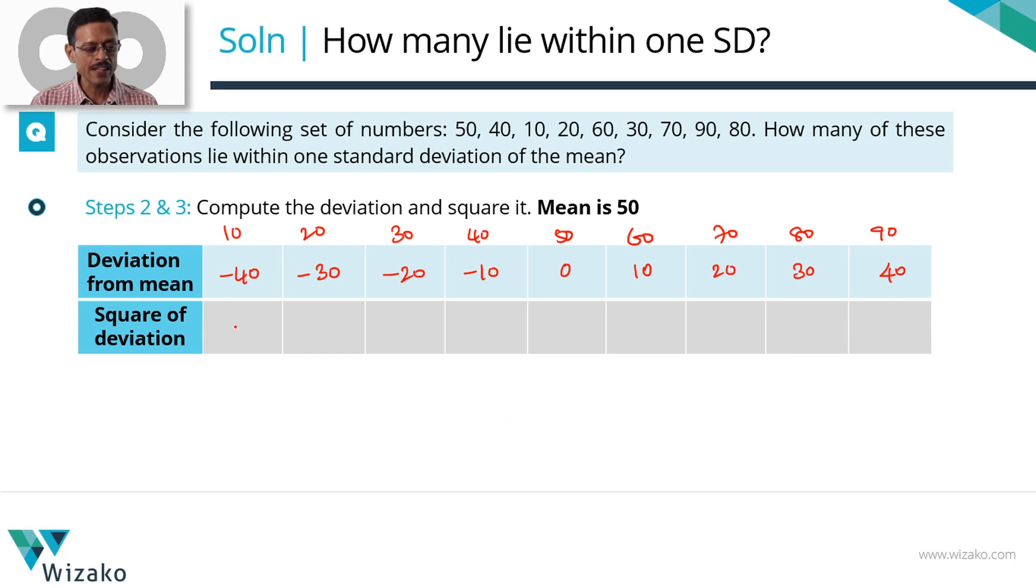Next step, let's square these deviations. Minus 40 square is 1600. Minus 30 square is 900. Minus 20 square is 400. Minus 10 square is 100. 0 square is 0. Square of 10 is 100. Square of 20 is 400. Square of 30 is 900. And square of 40 is 1600.